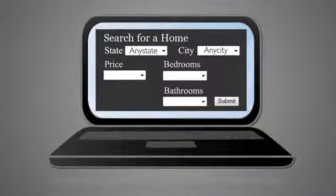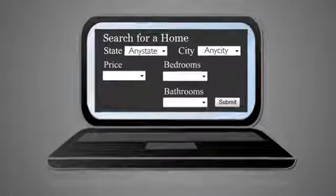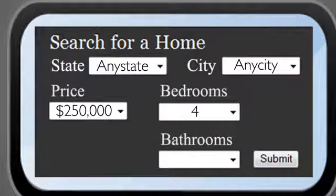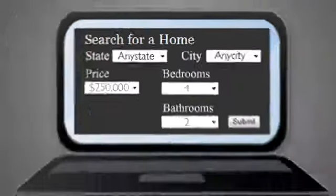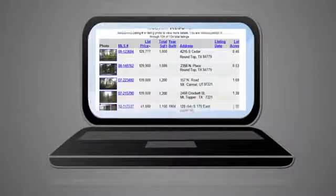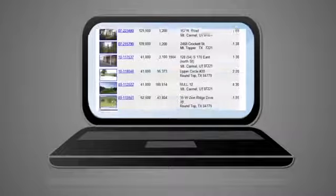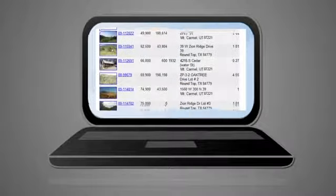The average homebuyer enters in just a few search criteria: price first, the number of bedrooms and bathrooms. From those three items, a typical MLS will display hundreds, maybe even thousands of homes that meet the buyer's needs.